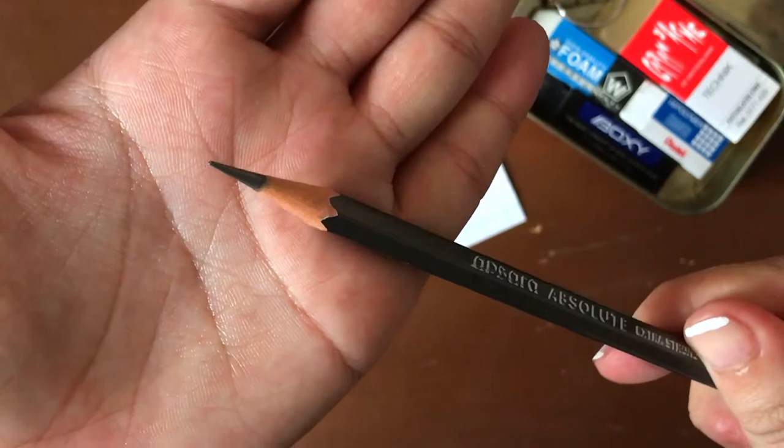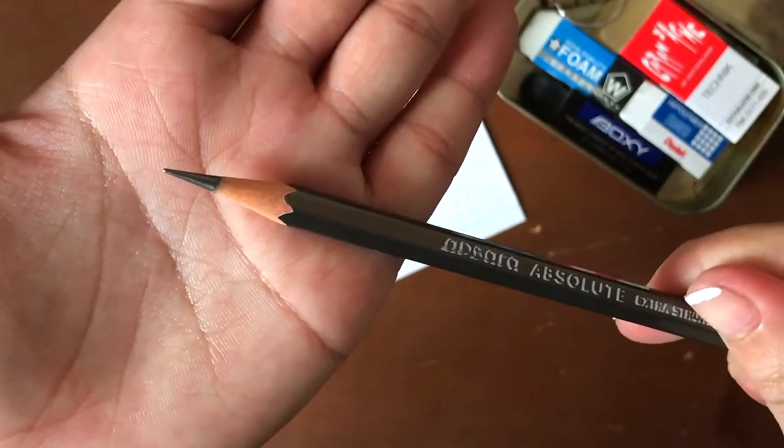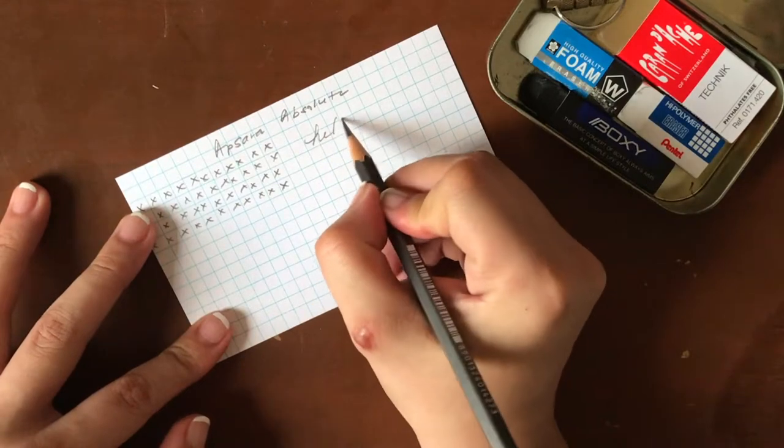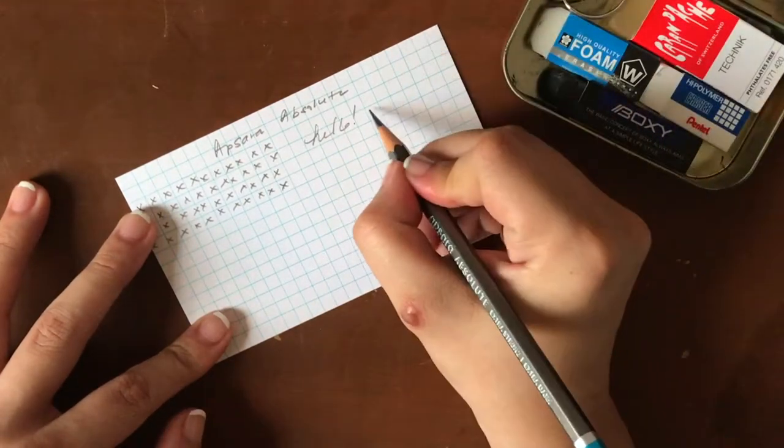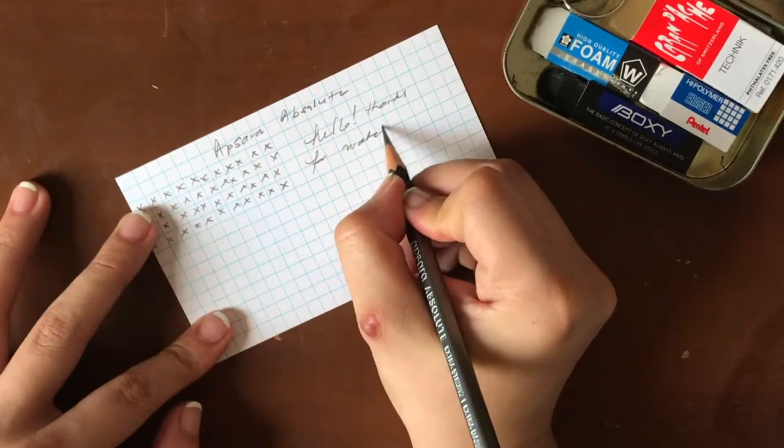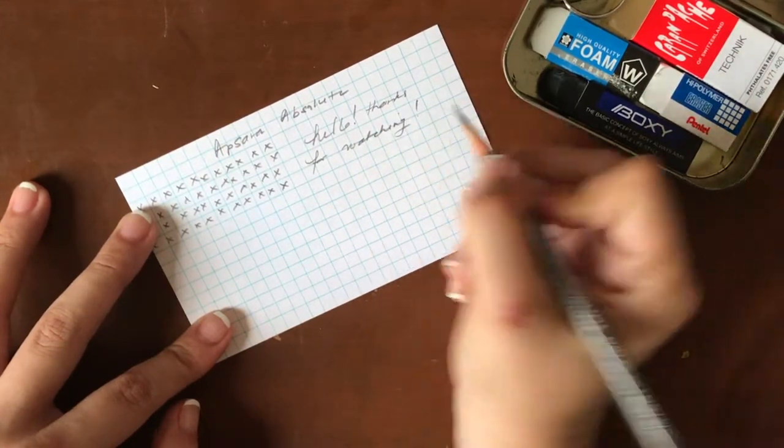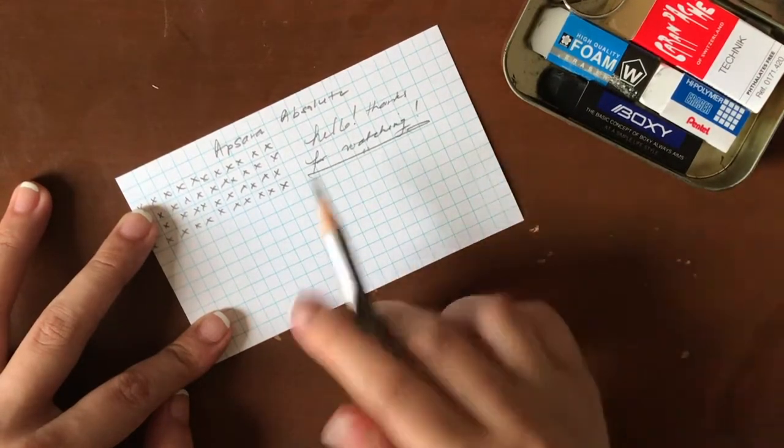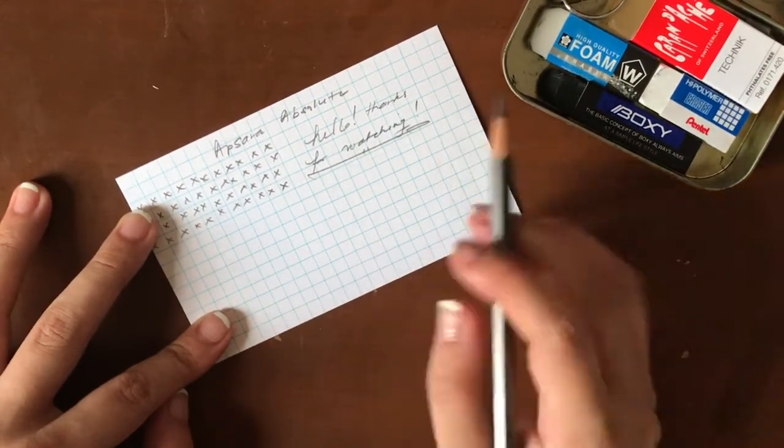So look at that. Gorgeous. I'm in love with this pencil, obviously. So now I'm just going to write a quick sentence. And you can see how smoothly it writes. Love that. And again, how dark it is, even after all this.